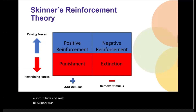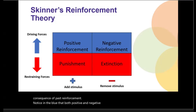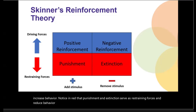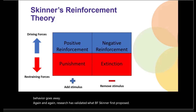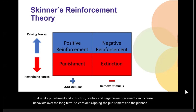B.F. Skinner was a psychologist who first proposed that current and future behavior is the consequence of past reinforcement. Notice in blue that both positive and negative reinforcement serve as driving forces to increase behavior. Notice in red that punishment and extinction serve as restraining forces and reduce behavior. Punishment applies something negative, painful, or unwanted in an effort to reduce a behavior. Extinction takes away all positive reinforcement and reward until the behavior goes away. Research has validated what Skinner first proposed: that unlike punishment and extinction, positive and negative reinforcement can increase behaviors over the long term. So consider skipping the punishment and planned ignoring and go all in with reinforcement.